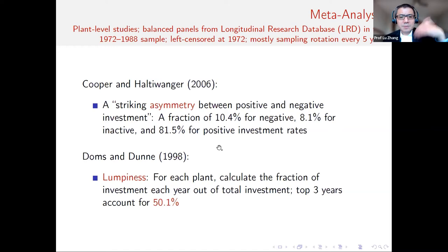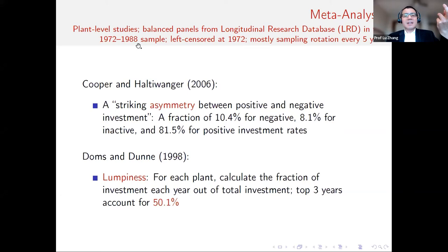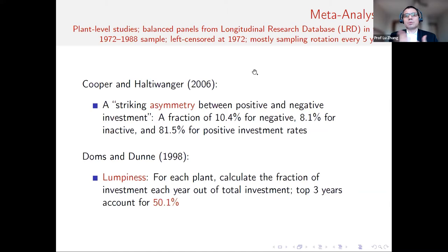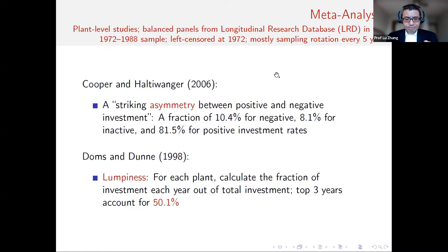Pretty much all investment theorists cite Cooper, Haltiwanger, and Doms and Dunne. They work with the Longitudinal Research Database. The sample only ends in 1988 because the Census Bureau stopped collecting data on capital retirements in 1987. After that, only in census years did they ask for book value of capital data. So this literature basically stopped because there's no data. This gives us motivation to work out all the data infrastructure for CompuStat, because CompuStat is one of the very few micro-level datasets where you can implement perpetual inventory, even for macroeconomists.